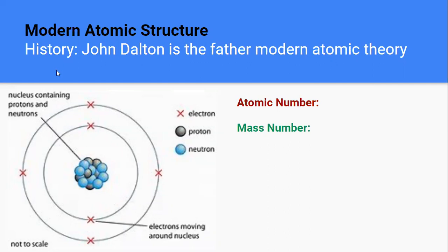So the modern atomic structure, if you go back in history, it's actually one of the scientists. He was actually a chemist, English chemist and physicist. The name is John Dalton. John Dalton is very famous. What is he famous for? He is even called the father of modern atomic theory.